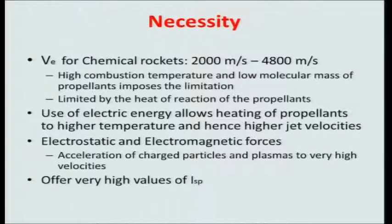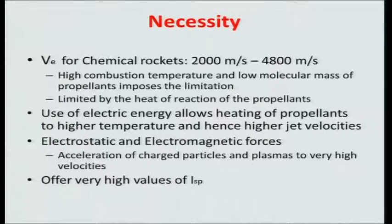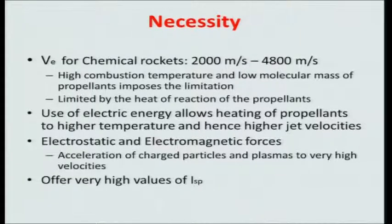The exit velocity attainable by a chemical rocket is limited to about 2000 to 4800 meters per second. What limits this? First, at very high combustion temperatures, molecules start to dissociate and dissociation reactions are endothermic, so the available energy goes down as temperature goes up. There is also heat loss at higher temperatures. Additionally, the low molecular mass of propellant imposes a limitation. Every propellant combination has a specific heat of reaction — you cannot get more than that.